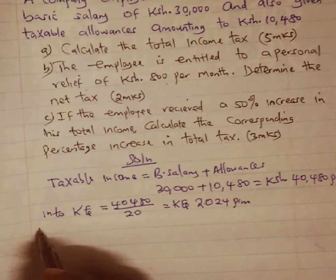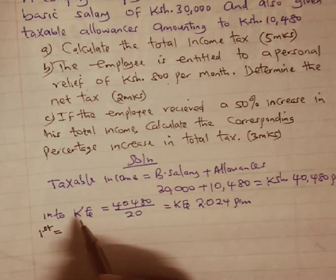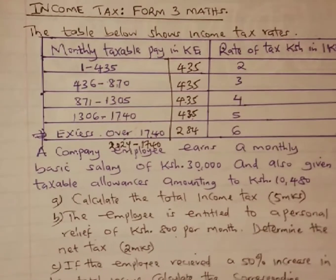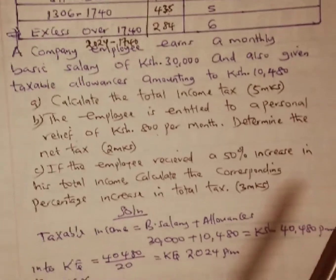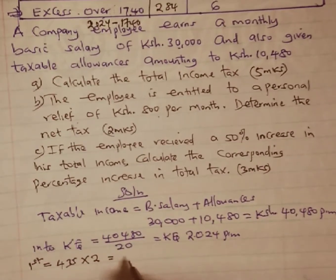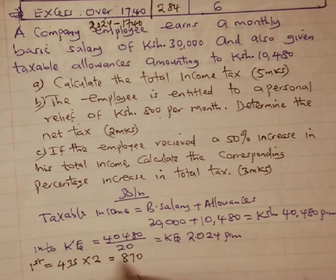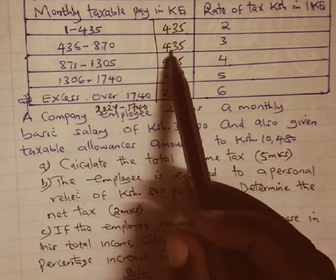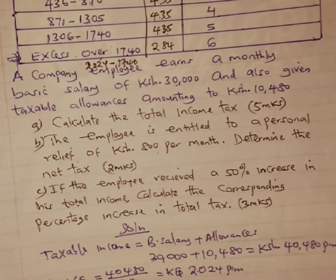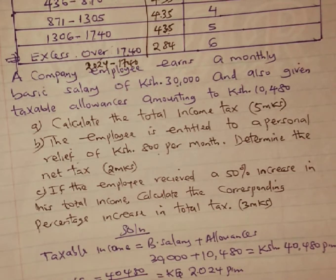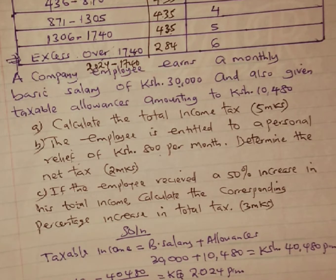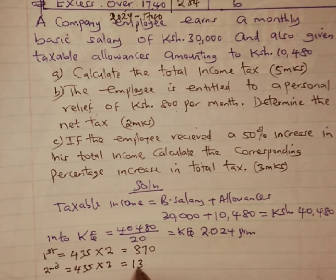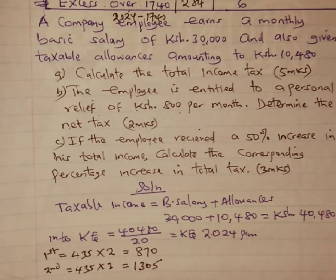Now we calculate the tax. In the first bracket, we take 435 multiplied by the rate of 2 shillings per pound, giving us 870 Kenya shillings. In the second bracket, we tax 435 at 3 shillings per pound: 435 times 3 gives us 1,305 Kenya shillings.